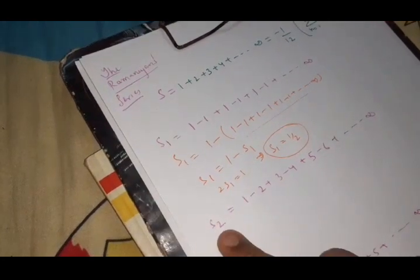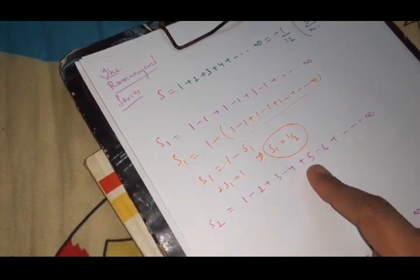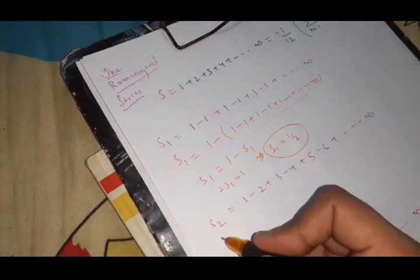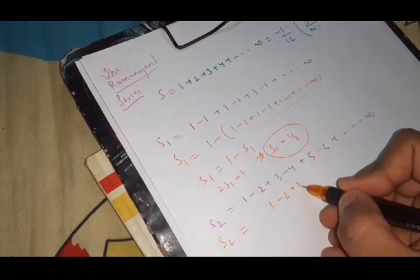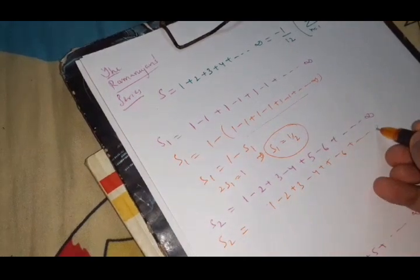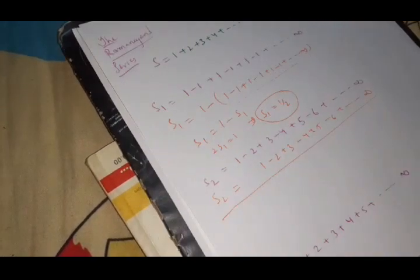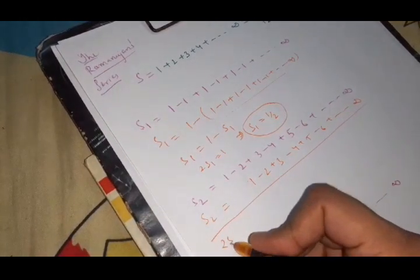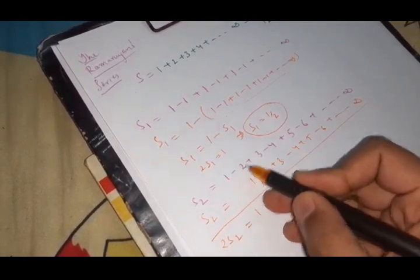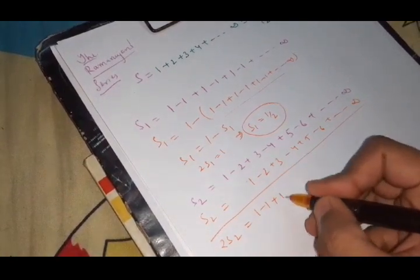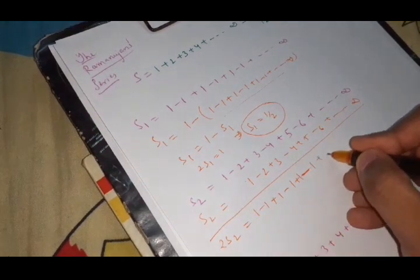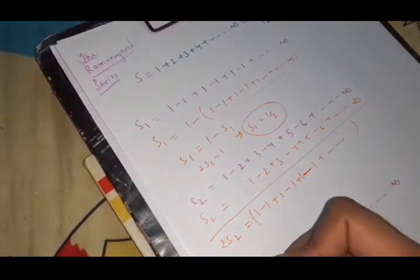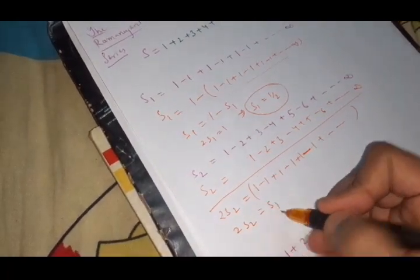Now we have the other series as 1 minus 2 plus 3 minus 4 plus 5 minus 6 dot dot till infinity. Now we will rewrite the series, but we will shift it. The same series, but we will shift it. Now we will add both of them. S2 plus S2 is 2S2. And what you will get? 1 minus 2 plus 1 is minus 1. 3 minus 2 is plus 1 minus 4 plus 3 is minus 1. So we are getting, are you familiar with this one? Yes, you are. This one, this is same as S1.